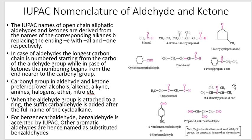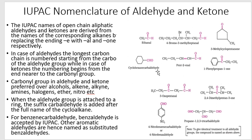If the CHO group is attached to a ring - above the ring - in that case we write the name of the ring and then add 'carbaldehyde'. For example, for a cyclohexane ring with a CHO group attached, the name is cyclohexanecarbaldehyde.